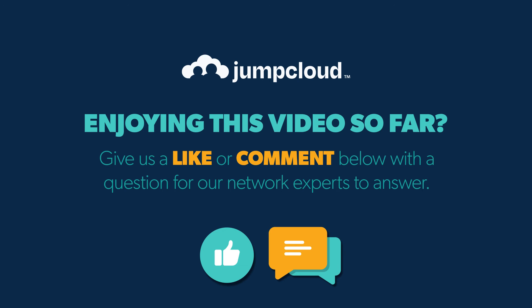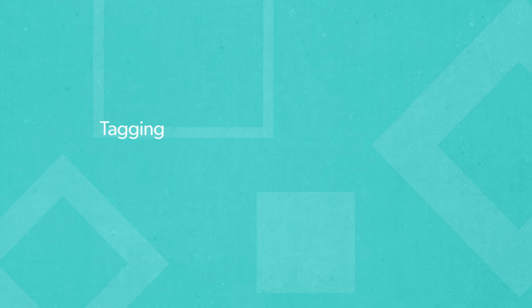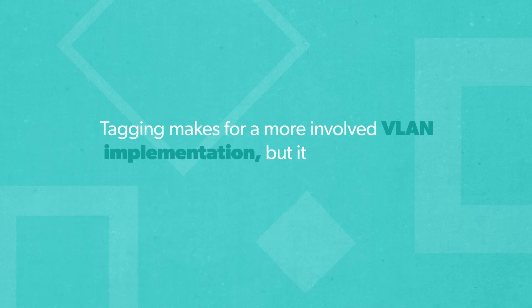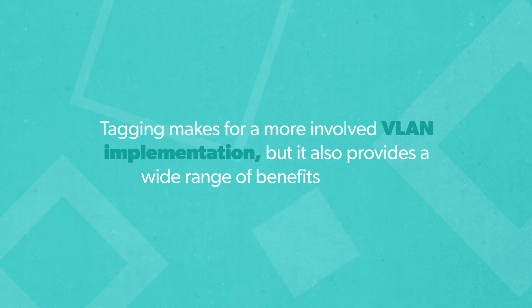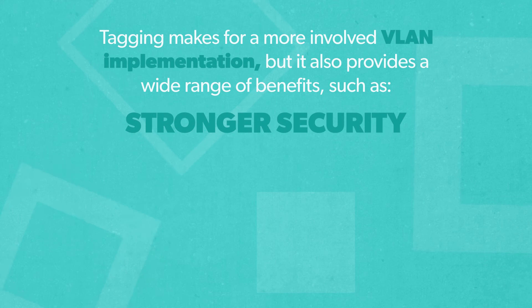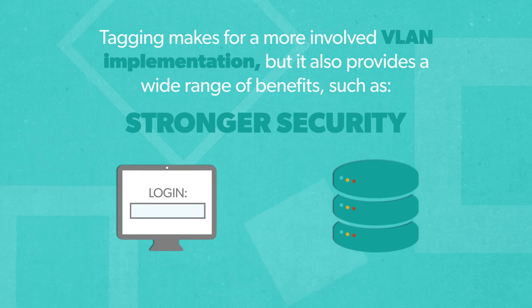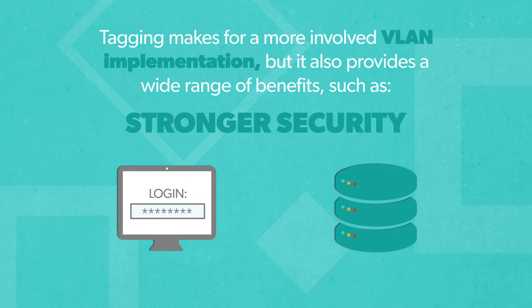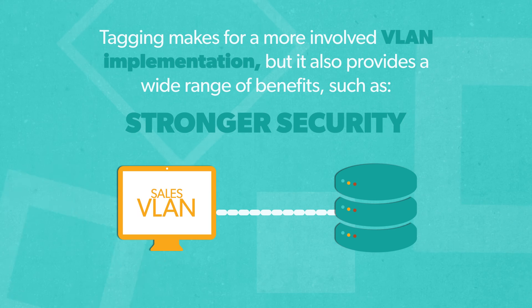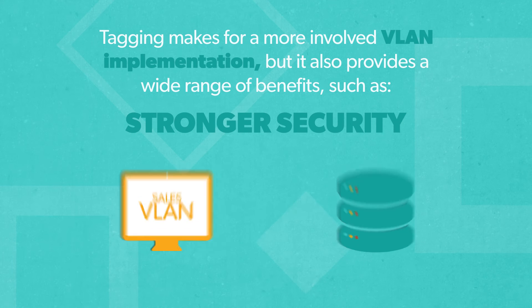Now back to tagging. Tagging makes for a more involved VLAN implementation, but it also provides a wide range of benefits, such as stronger security. Identifier tags can be weaved into the user authentication process, automatically and dynamically steering users into the proper VLAN.